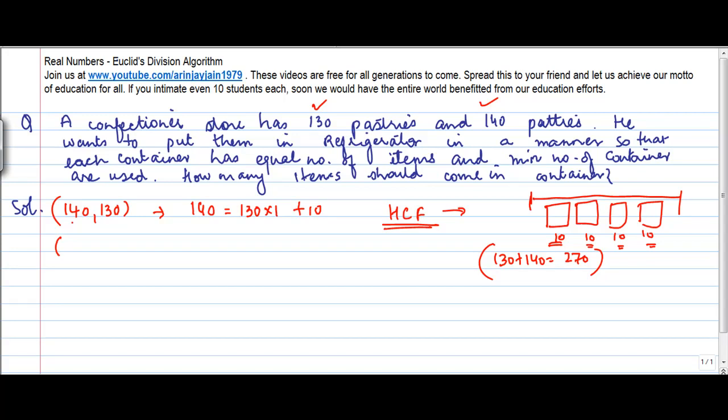So in second case, basically this becomes my A and the remainder becomes my B. Or 130 can be written as 10 into 13 plus 0. Now because 0 is a remainder.